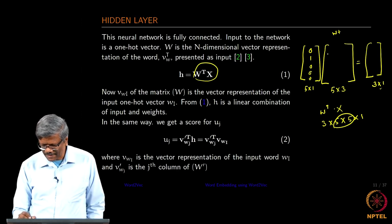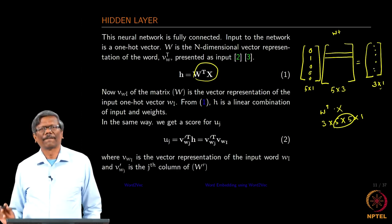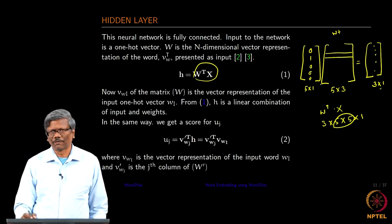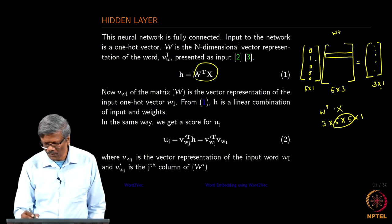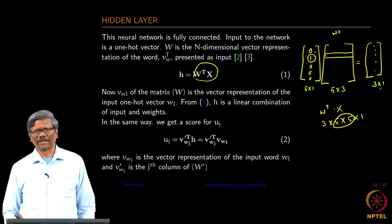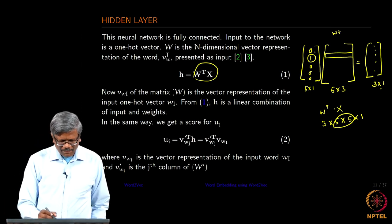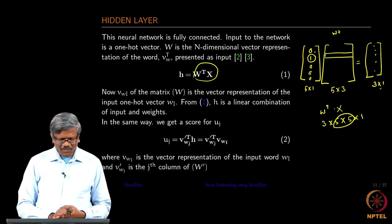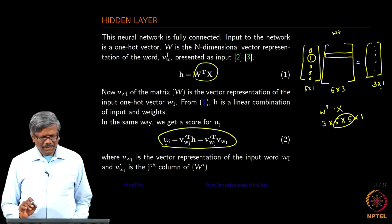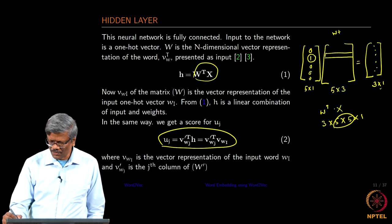When you do this operation what happens is it actually copies the row in the weight vector and places it into the hidden layer. Since all the values in the one-hot vector are zero except one, it does not matter what values are in the other rows of the weight matrix — it only takes the row corresponding to the value of 1 in the one-hot vector and copies that particular row into the hidden layer. Now we are going to be creating some more representations.